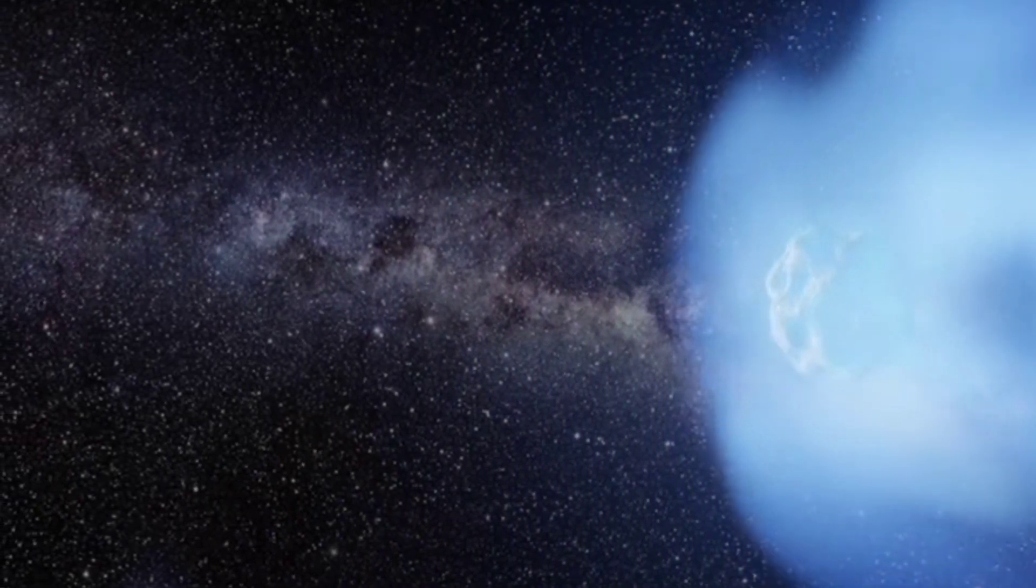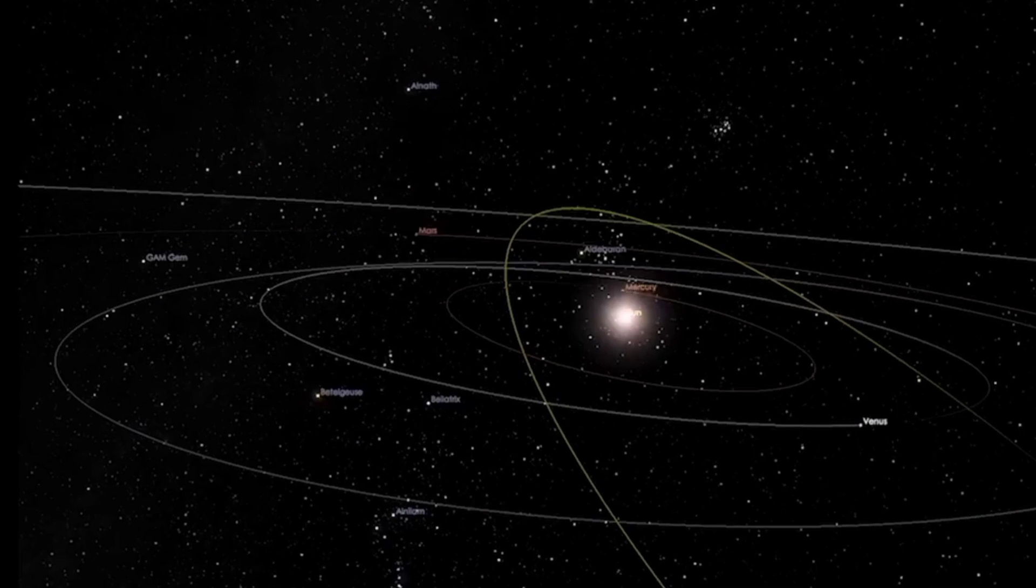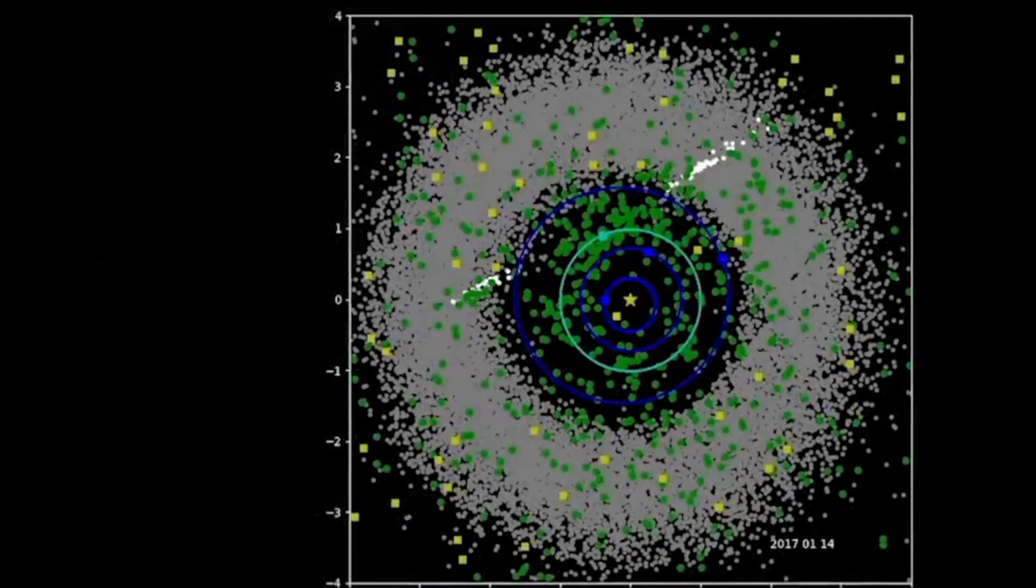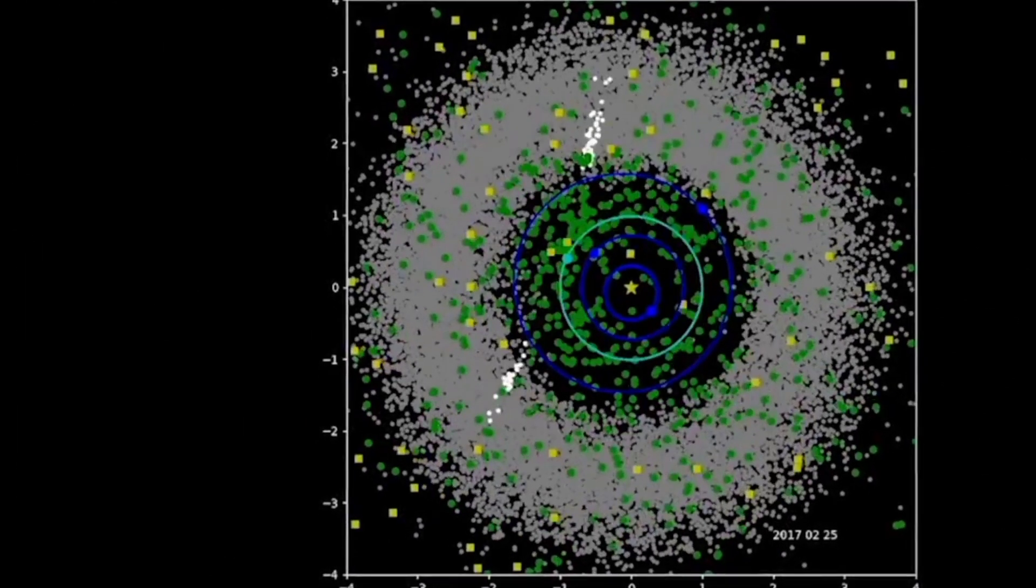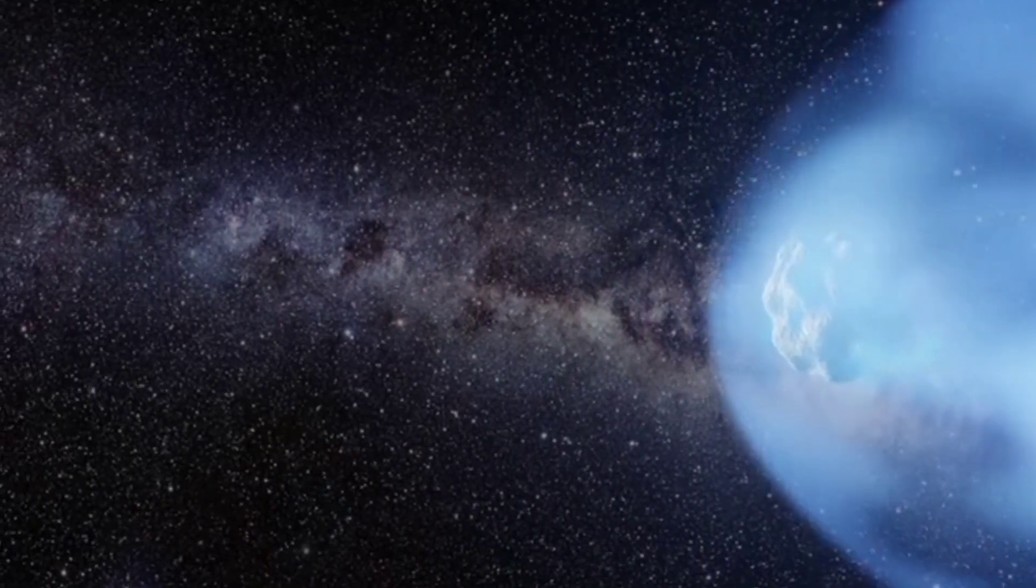Such space objects are called active asteroids or main belt comets. These are very rare. Only 7 have been confirmed to be main belt comets so far.